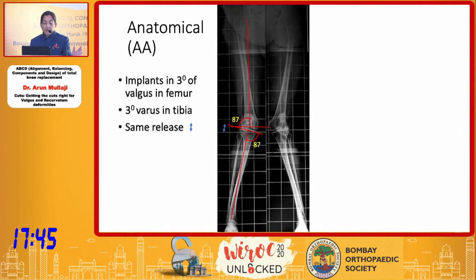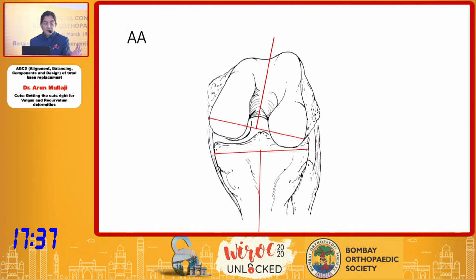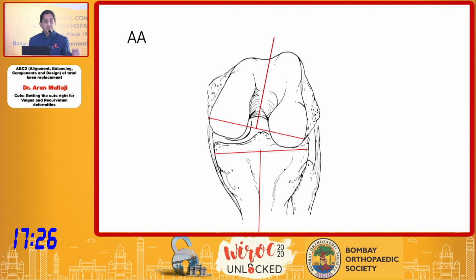With anatomical alignment, you keep the tibia in a few degrees of varus and the femur in valgus. It may be acceptable in extension, but when you come to the flexion gap — because of the 3-degree varus slope on the tibia — you will have a substantial release to perform in order to get a balanced gap.